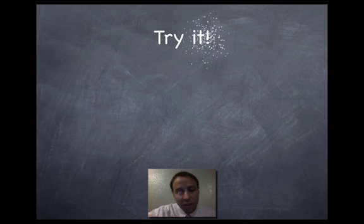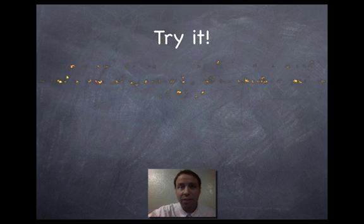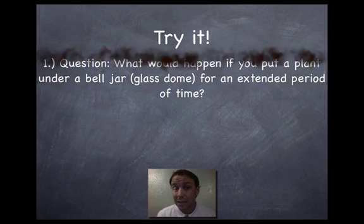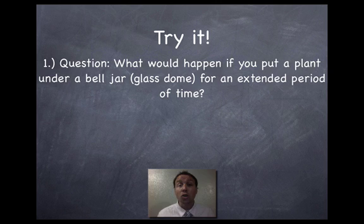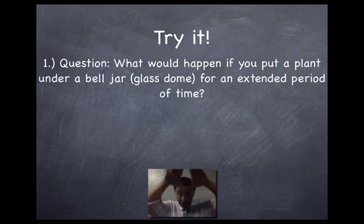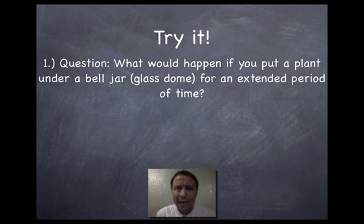I'm going to have you do what I always have you do at this stage — we're going to try it. I'm going to have you come up with a hypothesis. I'm going to give you the first two steps of the scientific method as though they're already done. So here's your question: what would happen if you put a plant under a bell jar? That's just a glass dome — what would happen if you put a plant under a bell jar for an extended period of time?